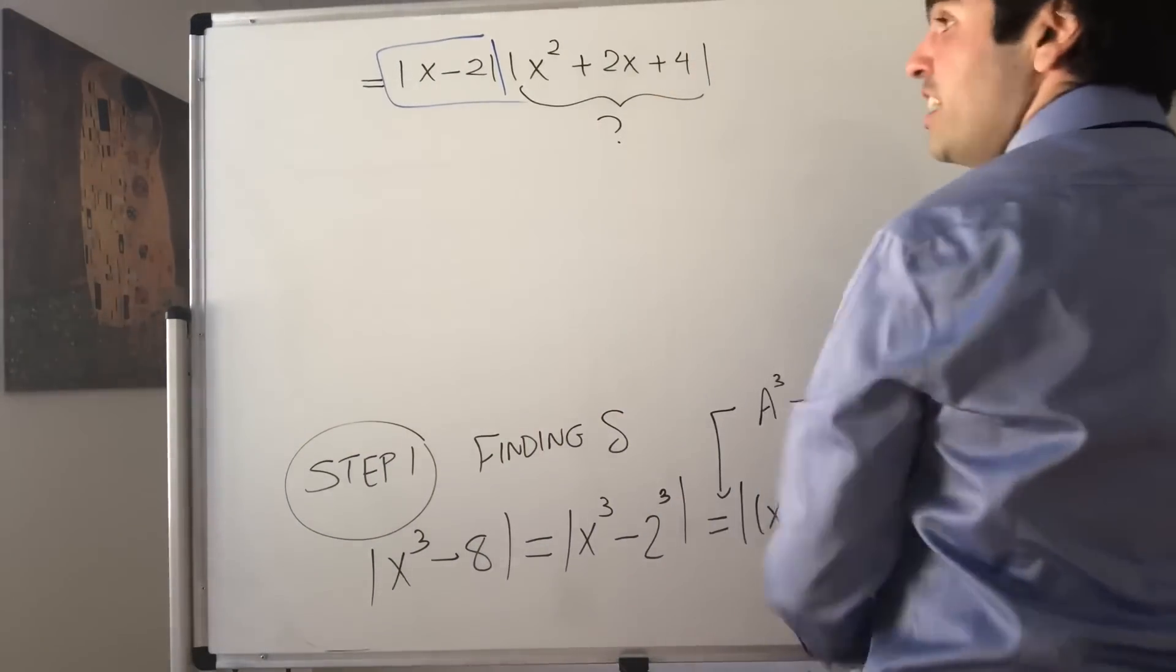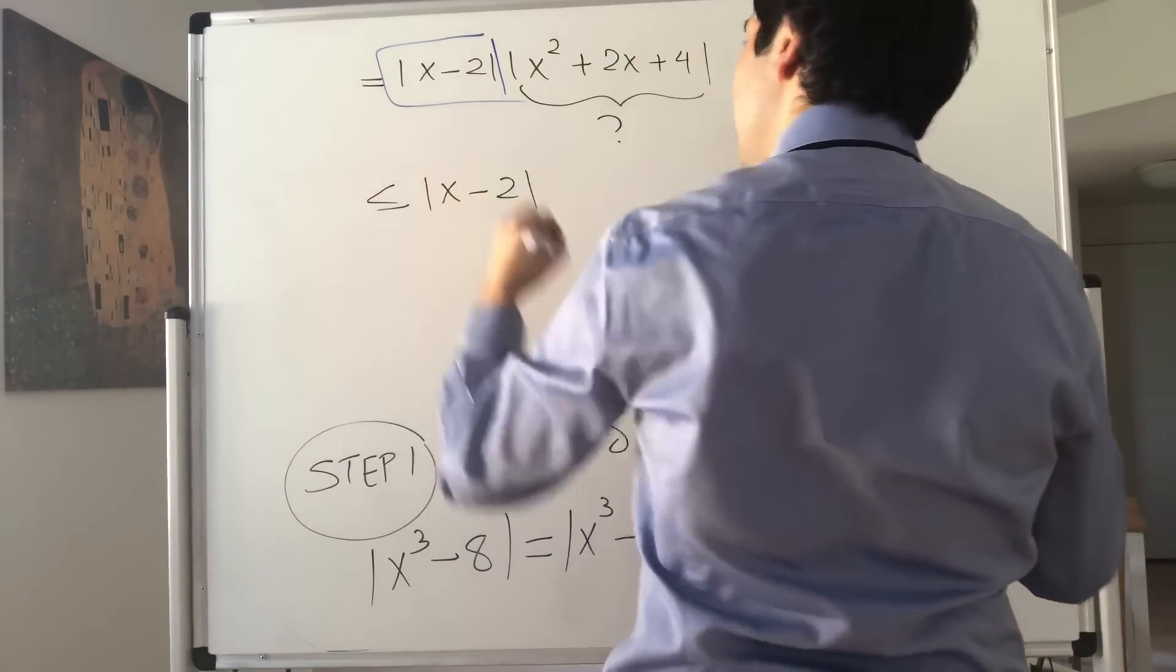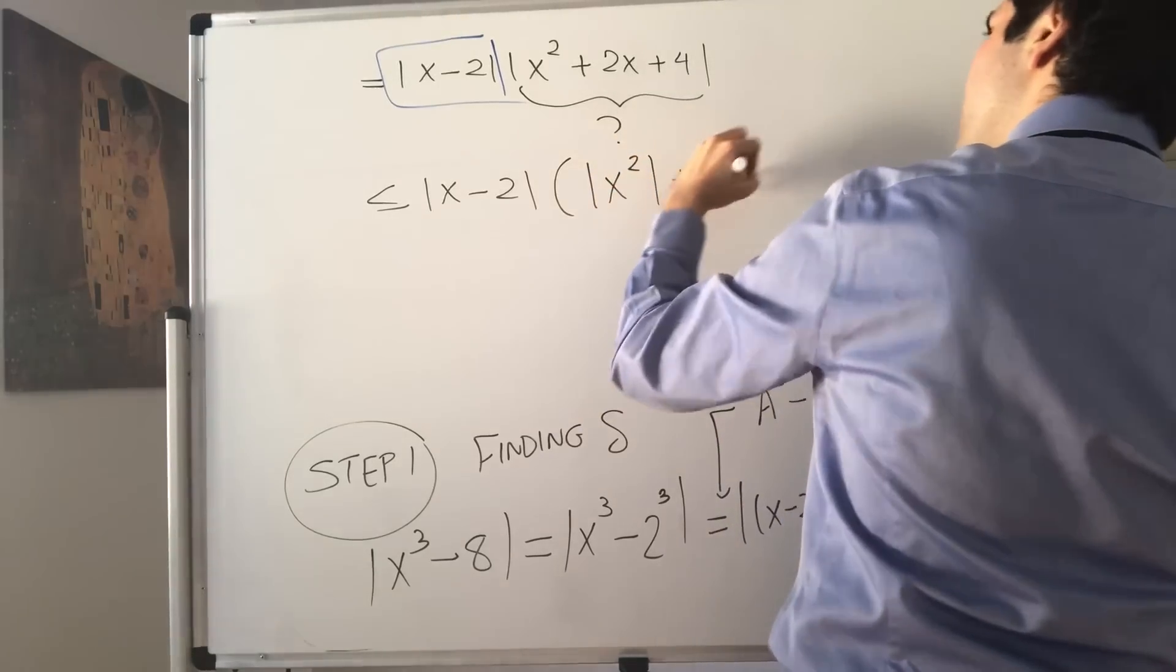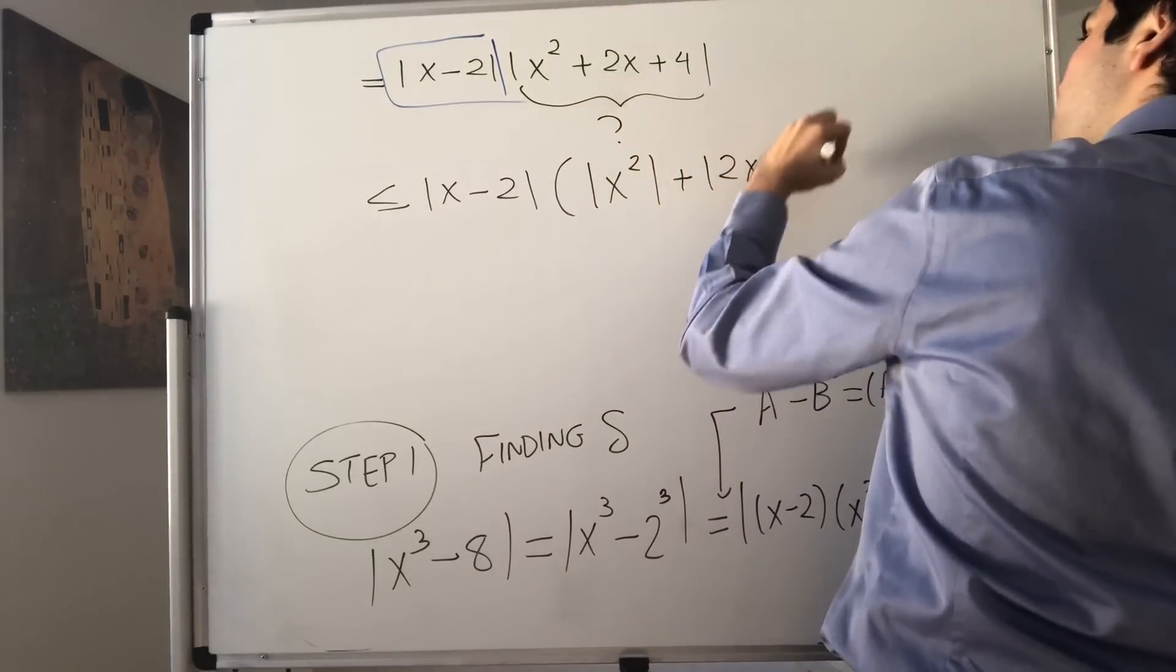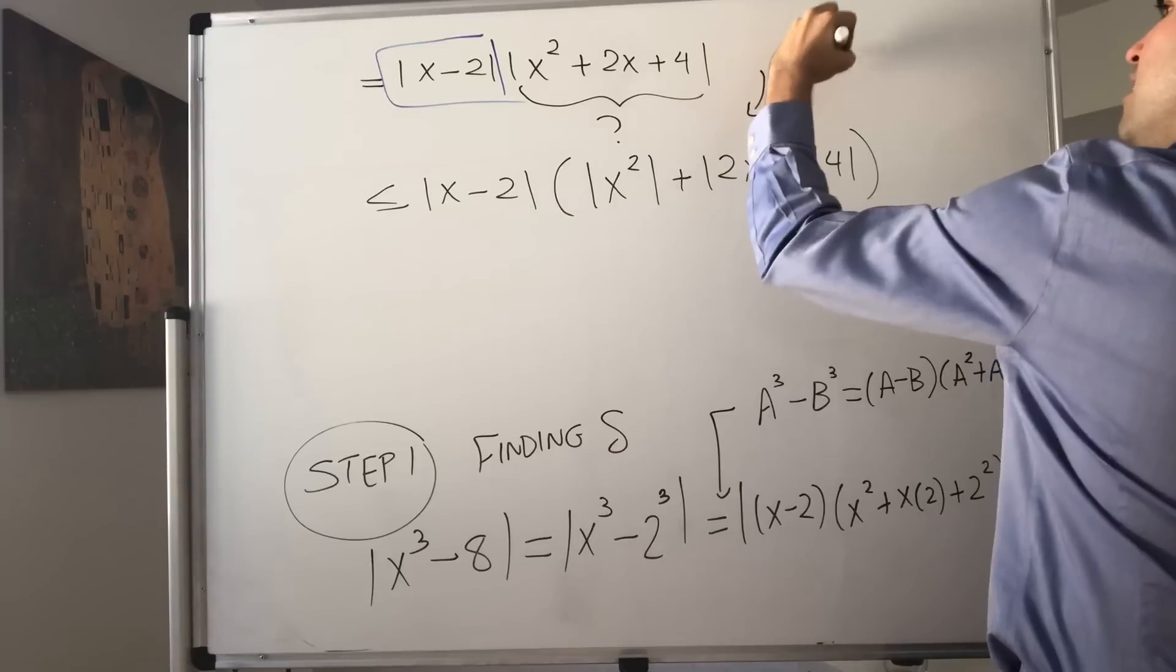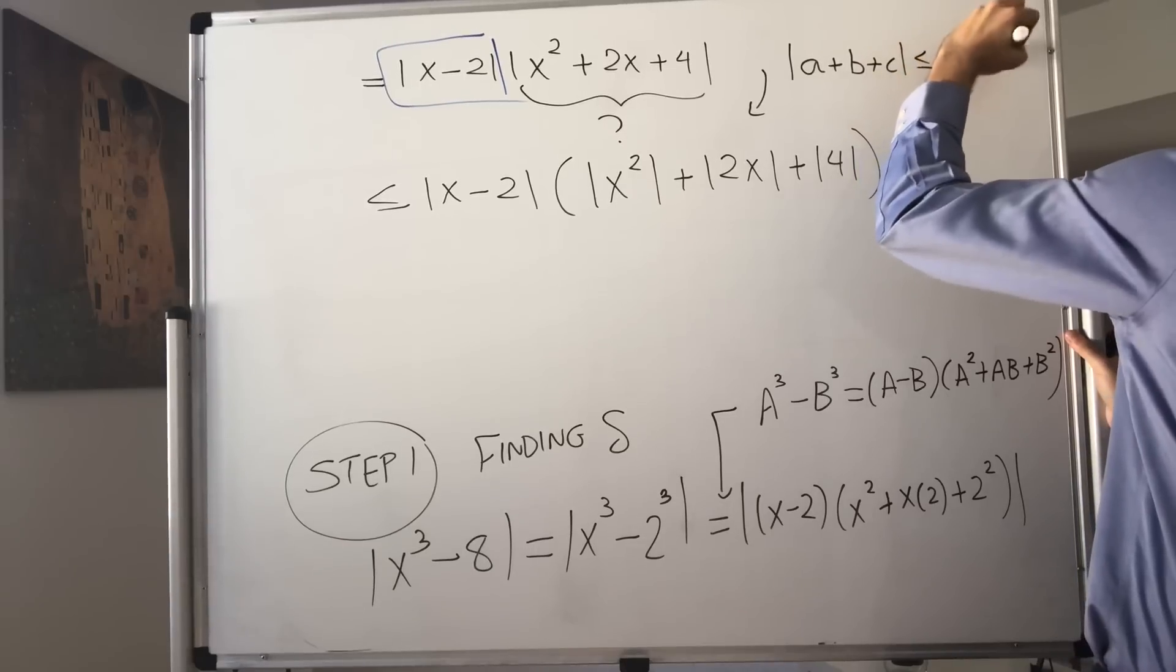We get, by the triangle inequality, this is less than or equal to x minus 2 times absolute value of x squared plus absolute value of 2x plus absolute value of 4. Here we just use the fact that absolute value of a plus b plus c is less than or equal to all the absolute values.